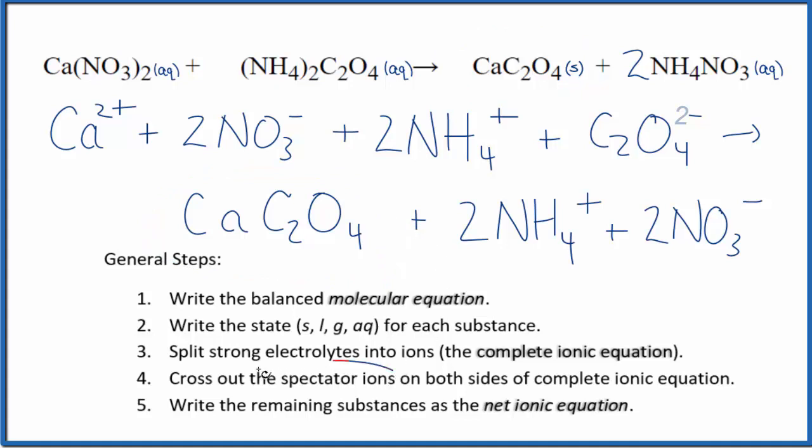Now we can cross out spectator ions. They're on both sides. So if we look at the reactants on top, there is two nitrate. We have these two nitrate ions here. And then in the products, we also have two nitrates. Get rid of those.